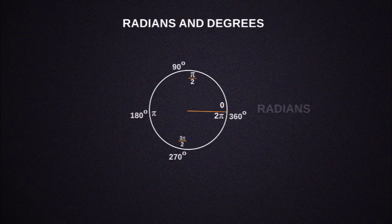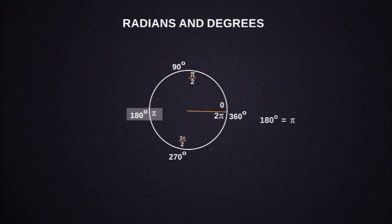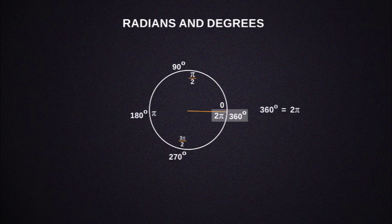Now taking radians and degrees in one circle, pi equals 180 degrees and 2 pi equals 360 degrees.